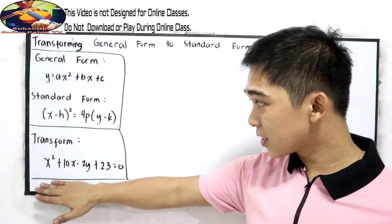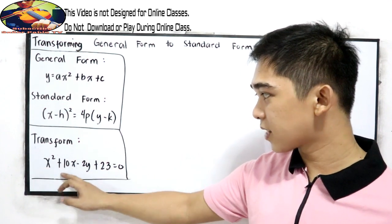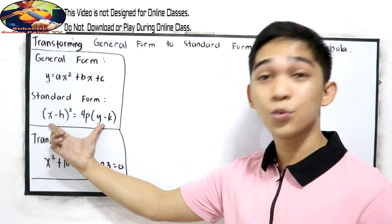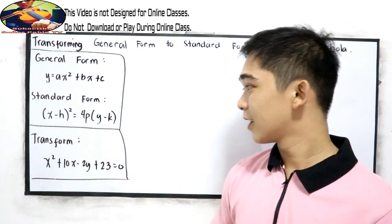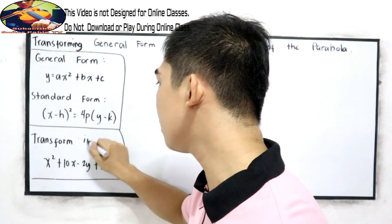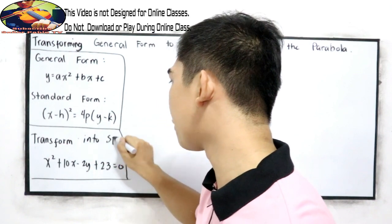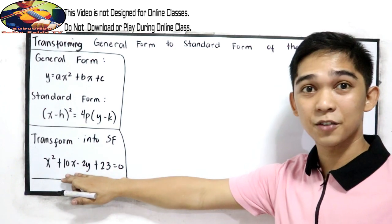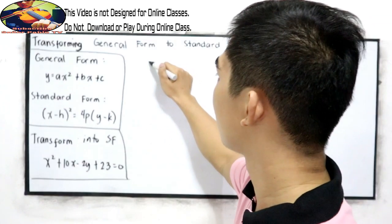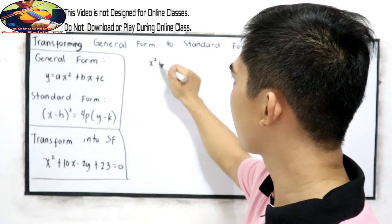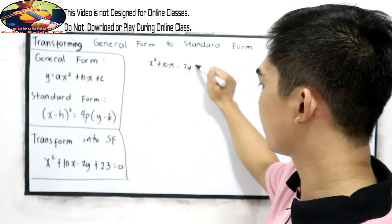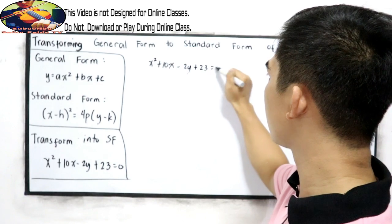Let's say we have this given x squared plus 10x minus 2y plus 23 equals 0. We're going to write into standard form. I'll transform into standard form. So let's begin. Just copy the given first. So x squared plus 10x minus 2y plus 23 equals 0.